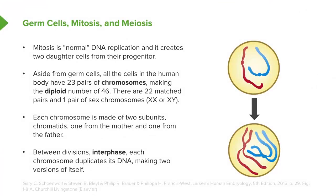Between divisions, we have a process called interphase during which the DNA is replicated which makes that diploid number of chromosomes allowing further development to occur and further division to occur.